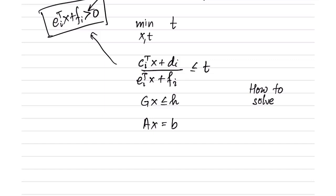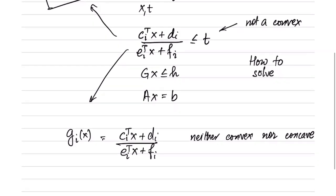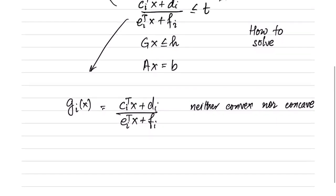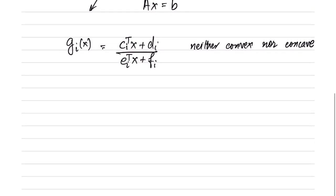Note that t is an optimization variable here, so this particular constraint is not a convex constraint, because when we talk about convexity we have to look at it in terms of x and t jointly. In fact, the function gi(x) = (ci^T x + di) / (ei^T x + fi) is neither convex nor concave, and hence you cannot apply any of the techniques we have learned so far. However, the interesting fact about this function is that it is quasi-convex.